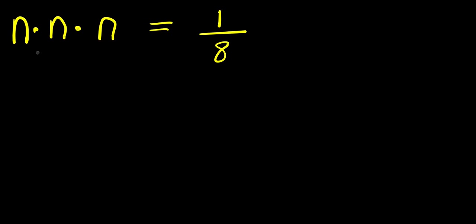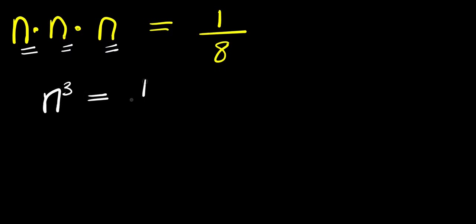Hello, how to solve this problem: n times n times n equals 1 over 8. We are solving for all values of n that satisfy this equation. Let's start by multiplying the left-hand side: n times n is n squared, times n is n to the power of 3, equals 1 divided by 8.